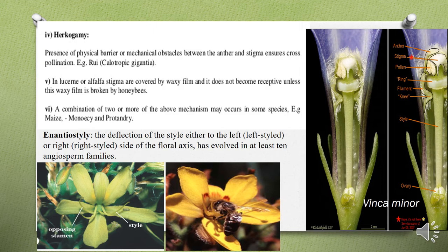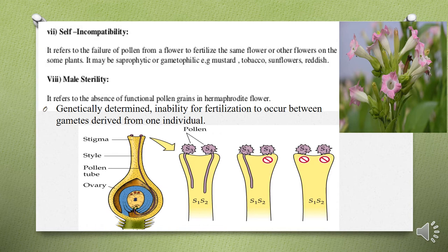Enantiostyly is another mechanism — the deflection of the style either to the left or to the right side of the floral axis, which has evolved in at least 10 angiosperm families. The other two factors that facilitate cross-pollination are self-incompatibility and male sterility. Self-incompatibility refers to the failure of pollen from the same flower to fertilize that flower or other flowers on the same plant.